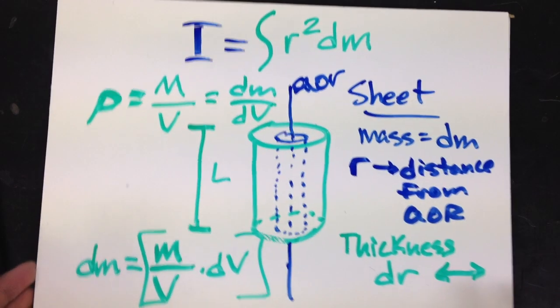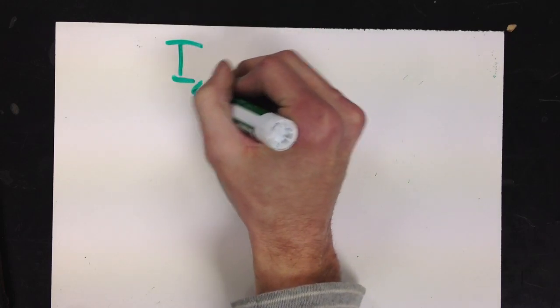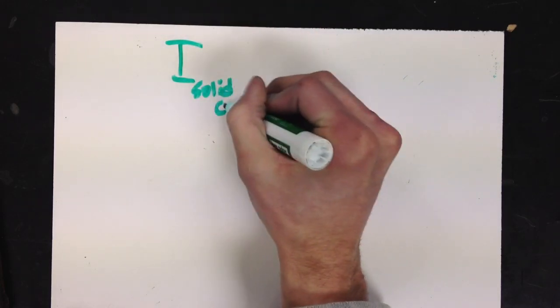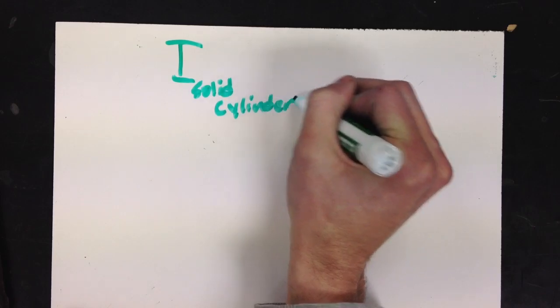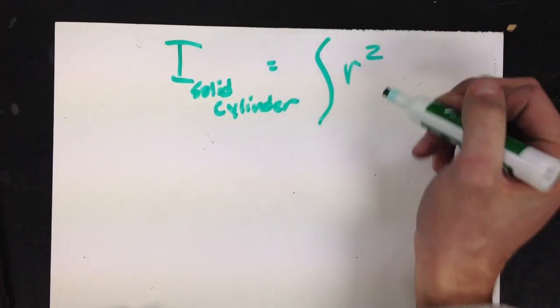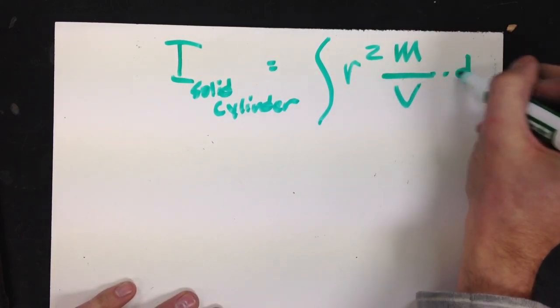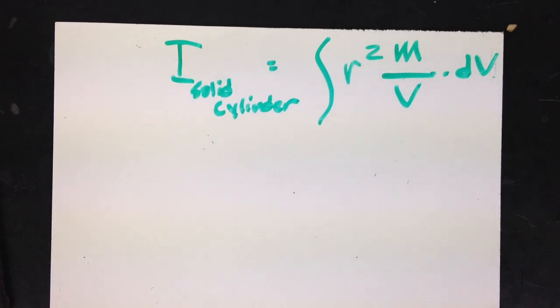So, let's do that. Moment of inertia of my solid cylinder. That is going to be equal to the integral of r squared dm, which is total mass over total volume times dv.